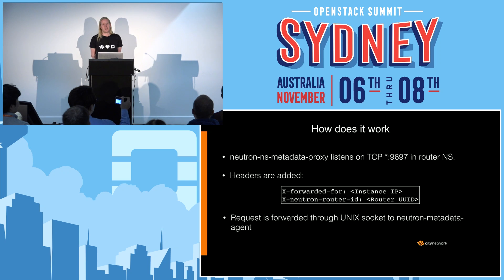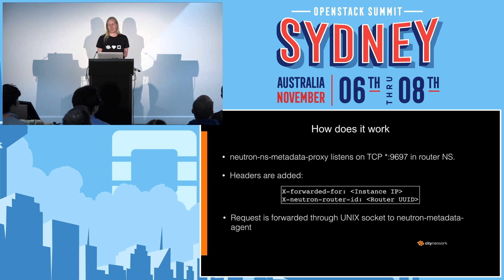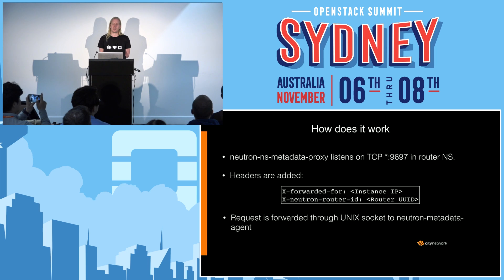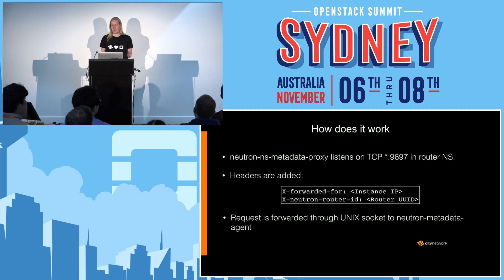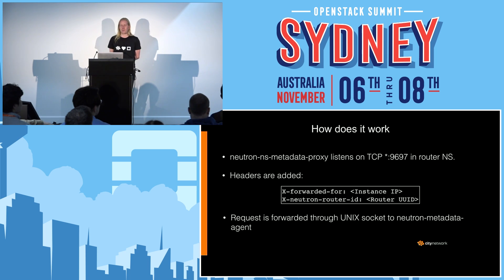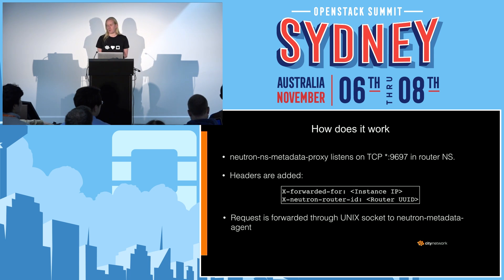On port 9697 TCP, a process called Neutron NS Metadata Proxy is listening. There is one of those processes running in each namespace. The Metadata Proxy will add an X-Forwarded-For header with the instance IP and an X-Neutron-Router-ID with the router UUID. This is necessary for the next step to know where this request is coming from.